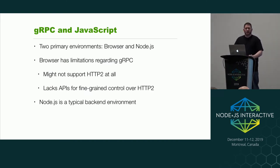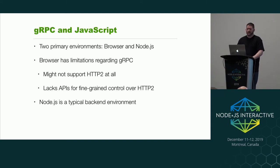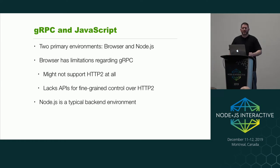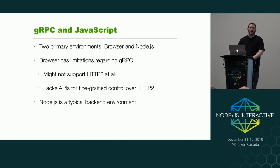gRPC is supported across a large number of languages — Go is probably the biggest one, but there's also a C core shared across a number of languages including Node, Go, Java, and Python. As far as JavaScript is concerned, there are two primary environments targeted: the browser and Node.js. The browser has fundamental limitations — the biggest one is being able to specify HTTP2, and you also need more precise control over HTTP2 frames, which browsers don't give you.